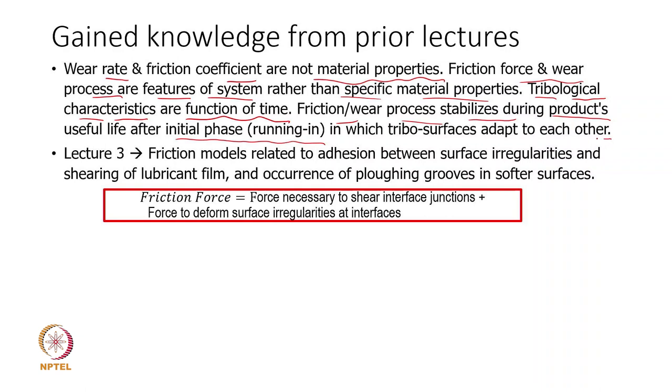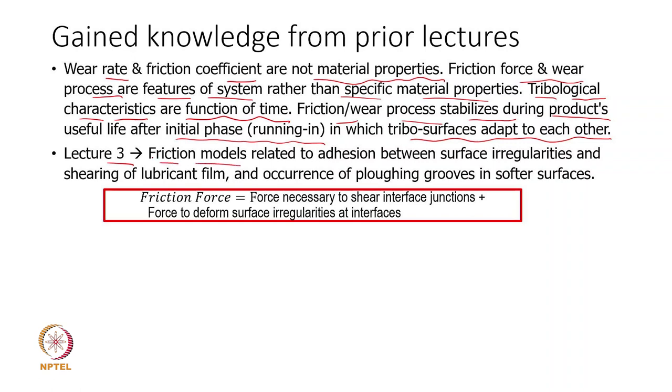During running-in, tribo surfaces adapt to each other — peak asperities may break and reshuffle into valleys or be discarded from the interface. The coefficient of friction comes down but will not be constant; it is essentially a statistical parameter. Friction has two main components: adhesion and plowing. For adhesion, we discussed junction growth, and that is where lubrication is really required — if you are able to reduce the shear stress at the interface, good tribological performance can be achieved.